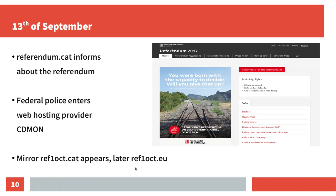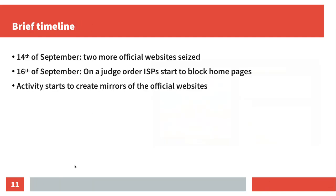Afterwards, two mirrors appeared: first ref1oct.cat, and then ref1oct.eu — where .cat stands for Catalonia, not the pet. The next day, two more official homepages got seized, and on the 16th of September, on a judge's order, the ISPs started to block homepages.